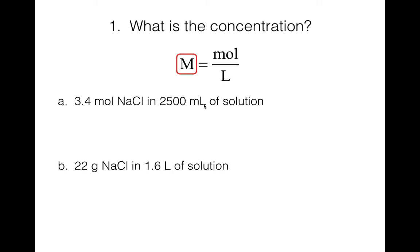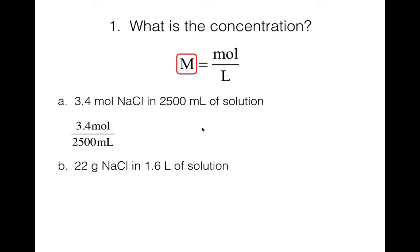We have 2500 milliliters on the bottom, but we need liters. So you're going to need a conversion factor and use dimensional analysis to convert milliliters to liters. You are welcome to do this in your head — just write 2.5 liters instead and do it in one step. But if you want to show all the work, put milliliters on top so it cancels, liters on the bottom, and remember the relationship is 1000 milliliters for every one liter. Now the milliliters cancel out and we're left with moles on top and liters on the bottom.